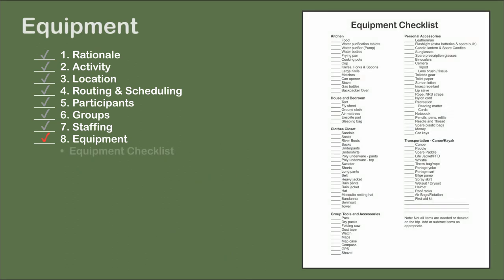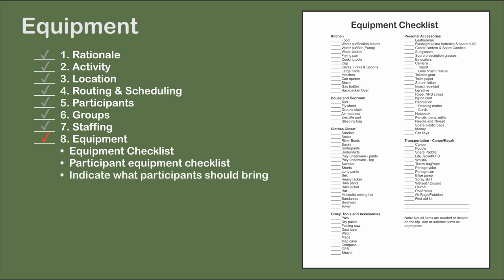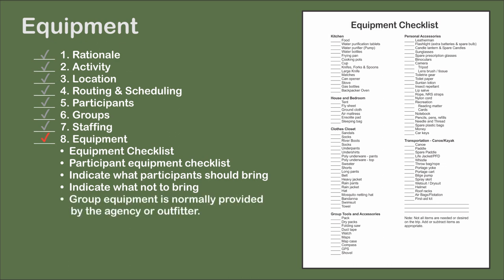Develop an equipment checklist — it tells you what you need for your trip. It can be comprehensive or simply a list of several items you don't want to forget. Personal equipment is what participants need to bring, such as clothing, bedroom accessories, tools, and recreation. Also include what not to bring. Group equipment is provided by the outfitter and is generally common to everyone, such as tents, kitchen equipment, food, water, and the first aid kit. The outfitter may provide nearly everything on the checklist or not much at all. Use the equipment list on the right as your starting point and tailor it to your needs.